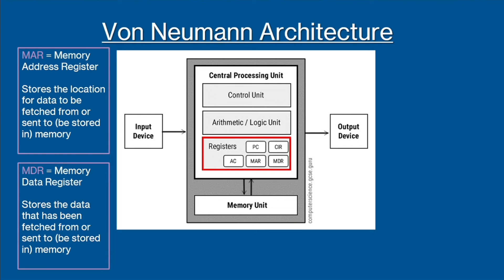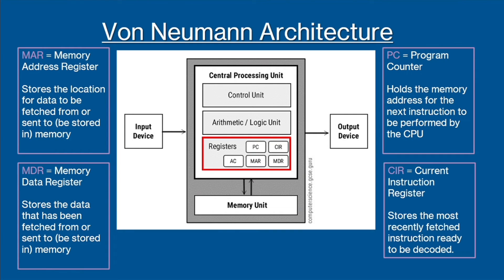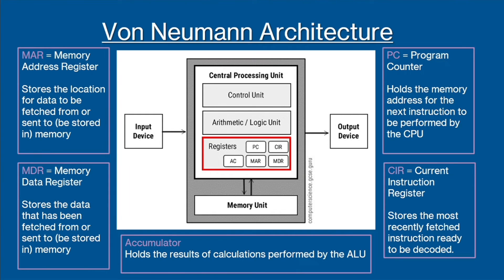Next, there's the MDR, or the memory data register. This stores data that has been fetched from, or is about to be sent to, and stored in memory. The PC, or program counter, holds the memory location address of the next instruction for the next cycle to be performed by the CPU. The CIR stores the next — which is the most recently fetched — instruction, ready to be decoded. The last register is the accumulator, and this stores the results of the calculations performed by the ALU.